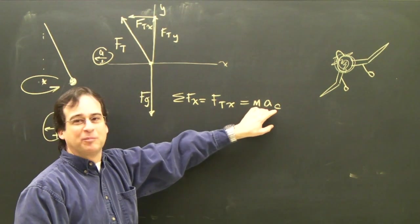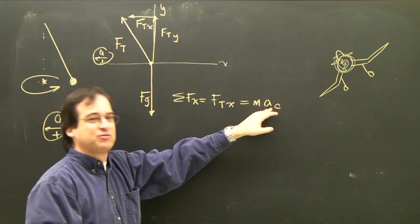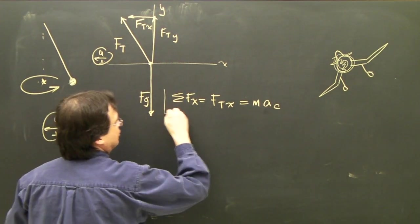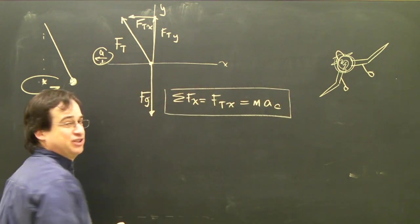ma,c. And you know this could be replaced by v squared over r, 4 pi squared r over t squared. So this equation is going to govern the motion in the x-direction.